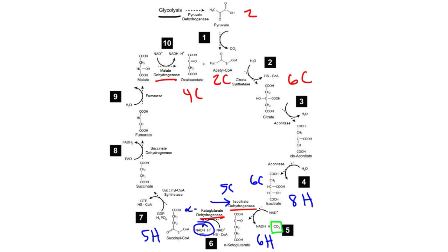and that was transferred to NAD plus to make NADH. We also got another CO2 molecule. So that's also a decarboxylation step. So the two carbon atoms in the acetyl part of acetyl coenzyme A were converted into carbon dioxide because that's the net result of cellular respiration, converting glucose into carbon dioxide and water.